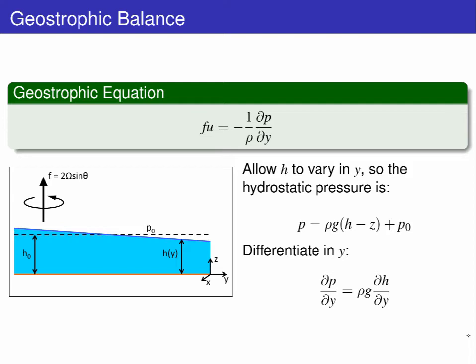On the right-hand side, the only term that has a y dependence is h, giving dp dy equals rho g dh dy.